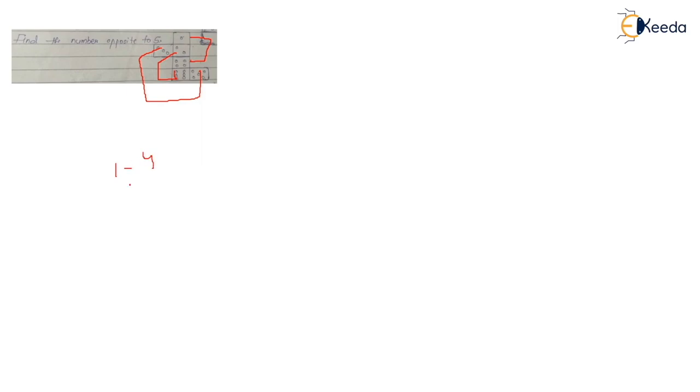They ask you to find the number opposite to five. Using the alternative faces rule: one alternative is four, two alternative is six, so three is the alternative of five. Three is the answer. That is how you find it. Thank you.